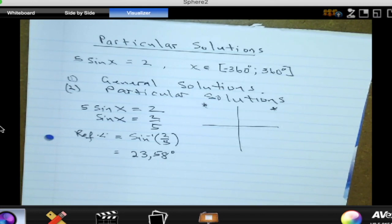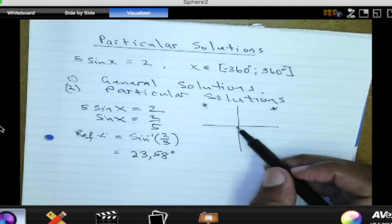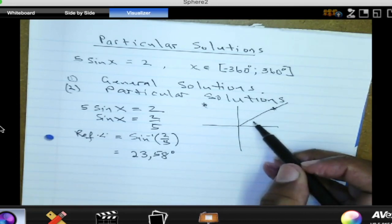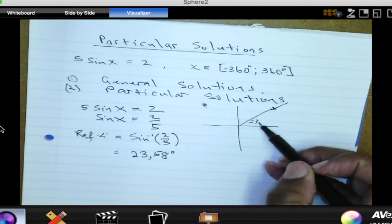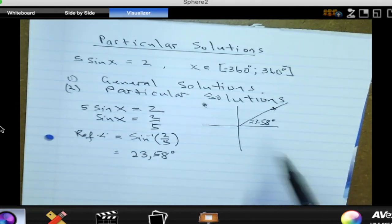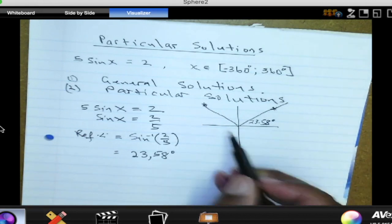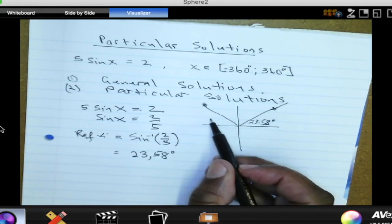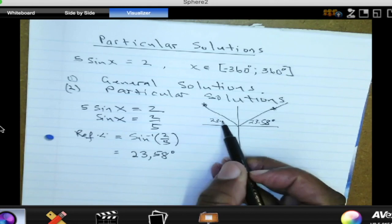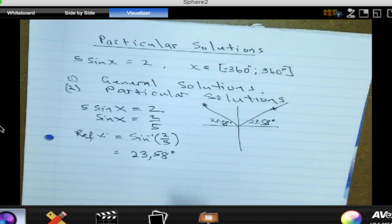Then our answers are found in quad 1 and quad 2. So if you go to quad 1, you can now draw that angle, 23.58. You can also draw that same angle in quadrant 2. Make this angle between the line and the X axis 23.58. Then we get our answers, one from quad 1 and the other one from quad 2.